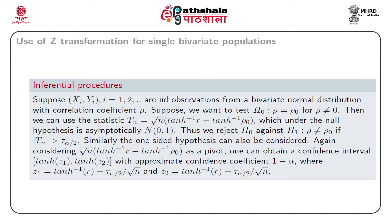Suppose first we want to test the null hypothesis that rho equals rho-naught, for rho-naught not equal to 0. Then we can use the statistic t_n which is the square root of n multiplied by tanh-inverse(r) minus tanh-inverse(rho-naught), which under the null hypothesis is asymptotically standard normal. Thus we reject the null hypothesis against the alternative that rho is not equal to rho-naught if the absolute value of t_n exceeds tau_{alpha/2}.